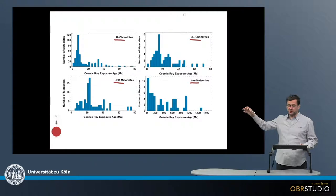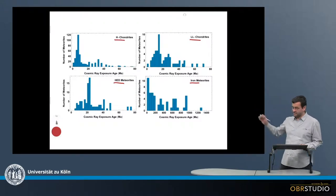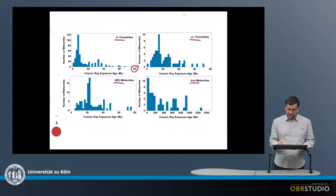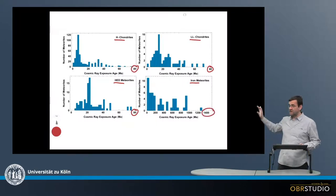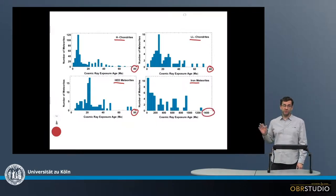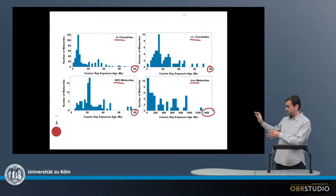Now the stone meteorites all have the same x-axis scaling up to 80 million years. This is different for the iron meteorites, which scale up to almost 1,500 million years, so 1.5 billion years. And this is the first major difference here.